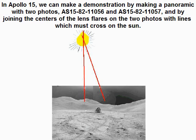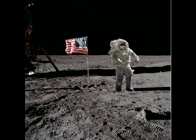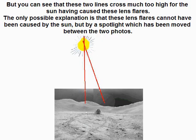In Apollo 15 we can make a demonstration by making a panoramic with two photos, the S15-82-11056 and the S15-82-11057, and by joining the centers of the lens flares on the two photos with lines which must cross on the sun. But you can see that these two lines cross much too high for the sun to have caused these lens flares. The only possible explanation is that these lens flares cannot have been caused by the sun, but by a spotlight which has been moved between the two photos.